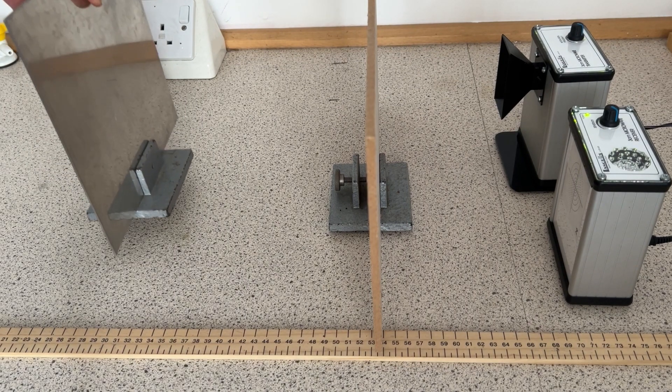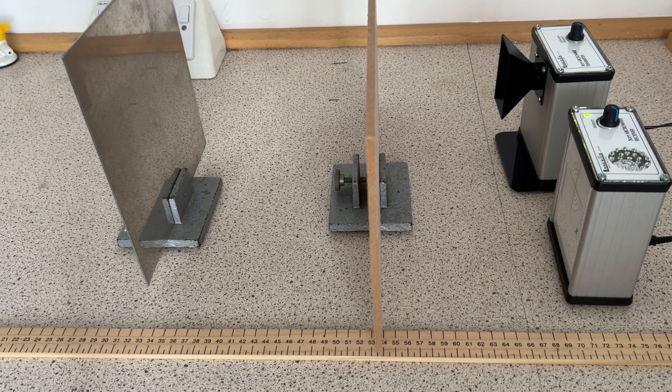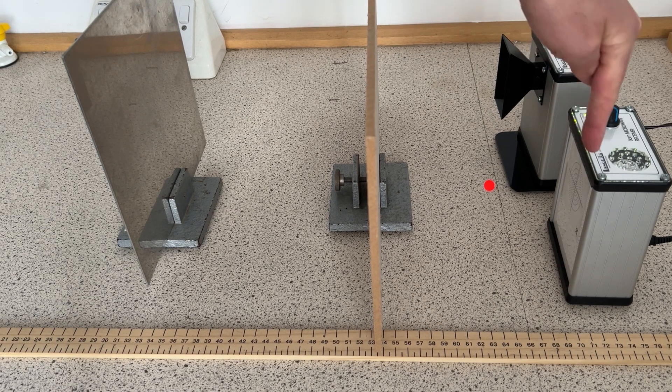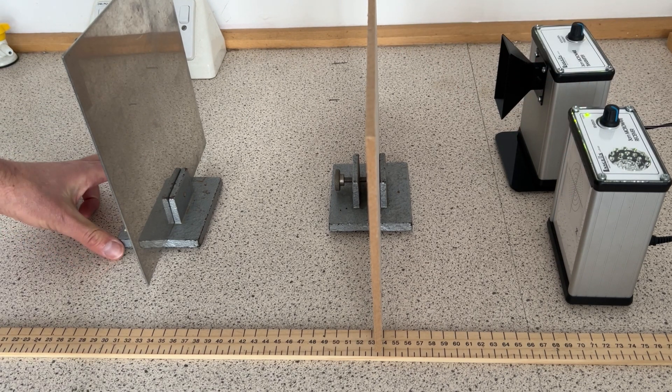When we add a metal plate beyond the piece of hardboard, we get a much louder sound coming from the receiver because microwaves are being reflected from the metal plate as well as from the hardboard, and they add together.